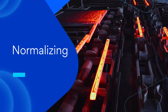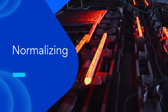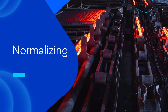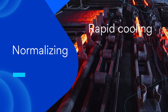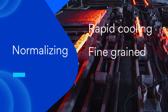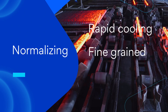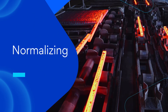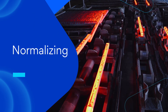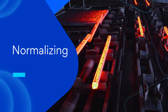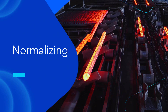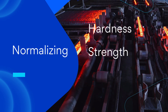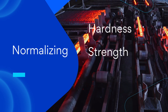Normalizing is a process in steel manufacturing where cooling of material is done rapidly in still air, with an aim to achieve finer grain structure and uniformity in material. Its primary objectives include improving mechanical properties such as hardness and strength, as desired in our structural steel.